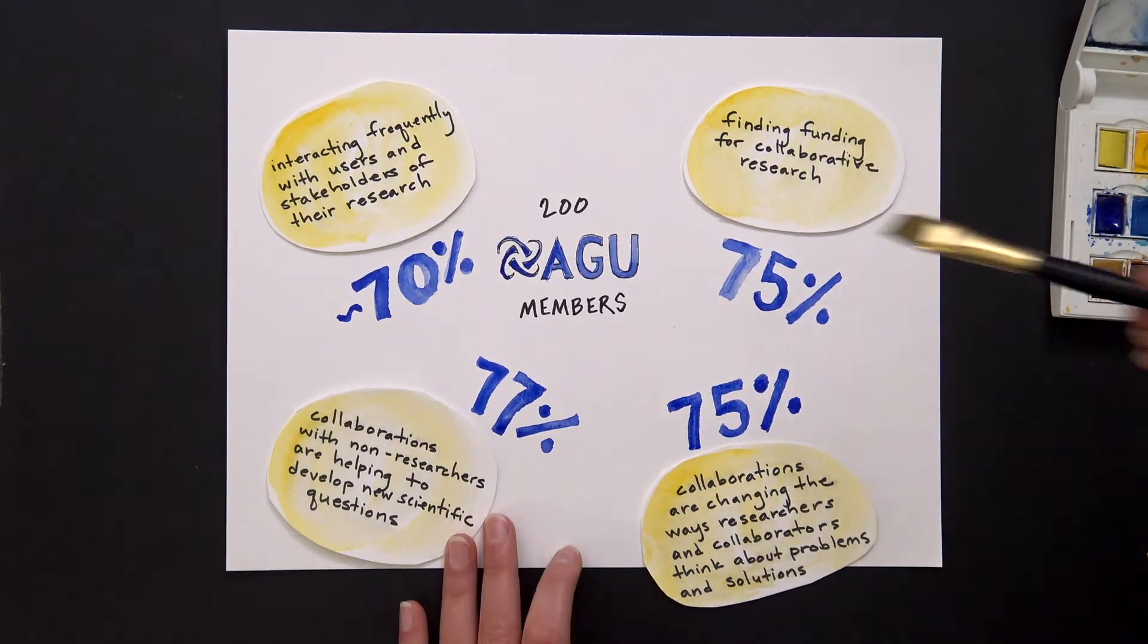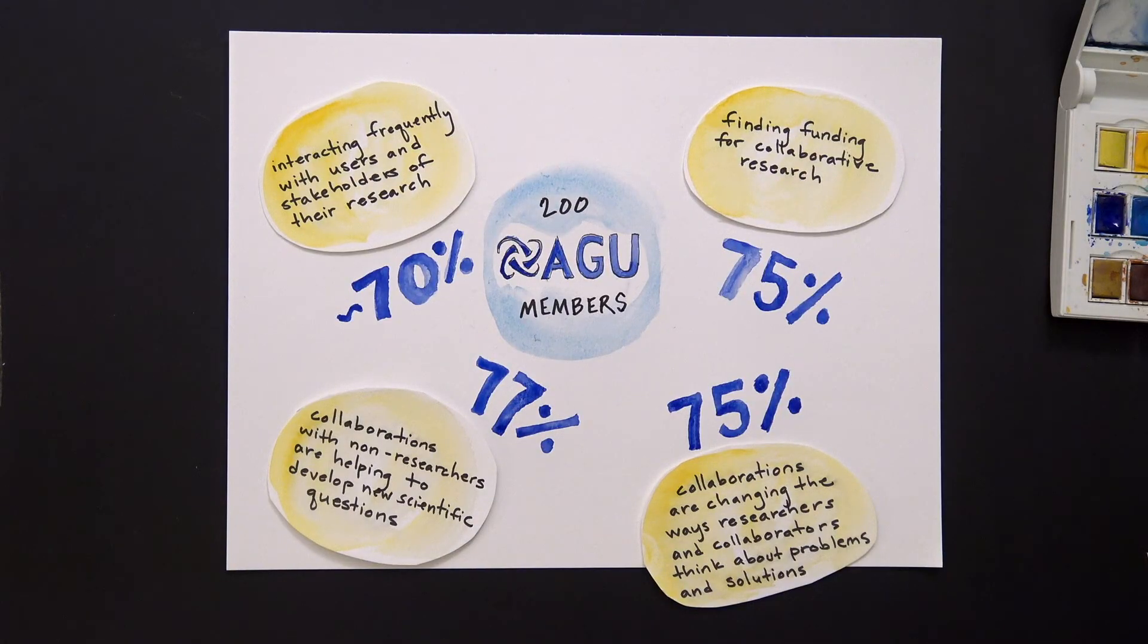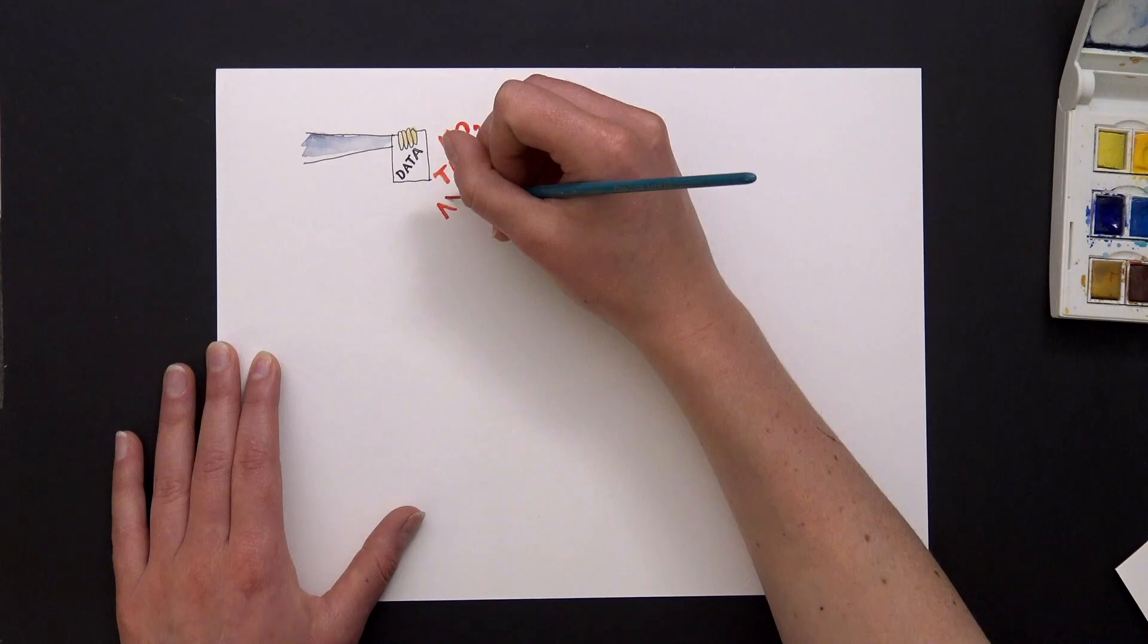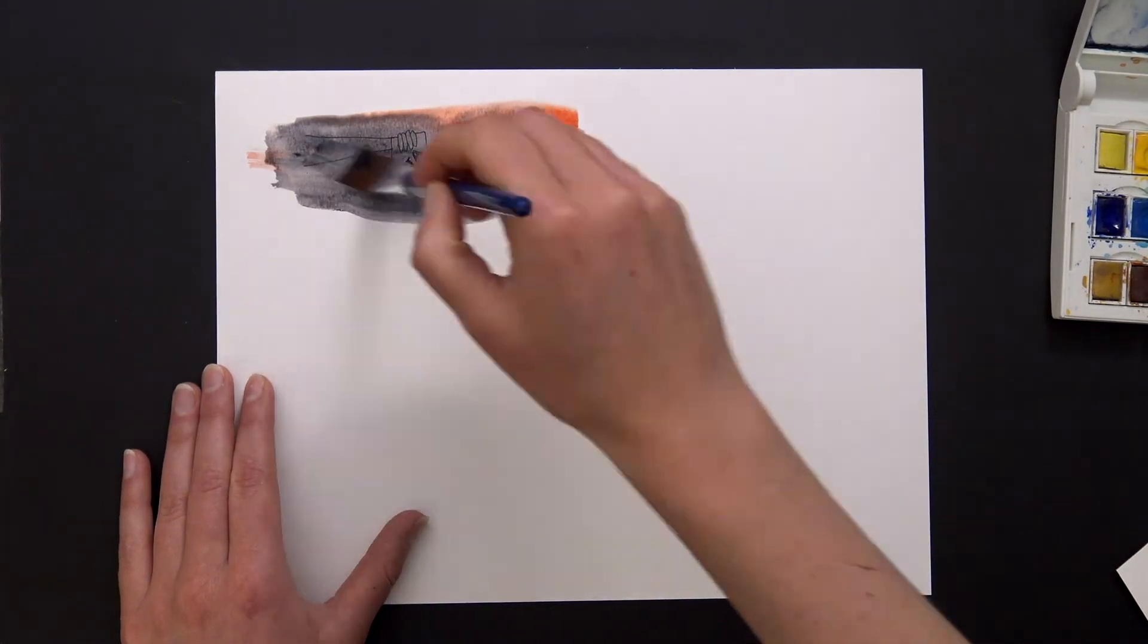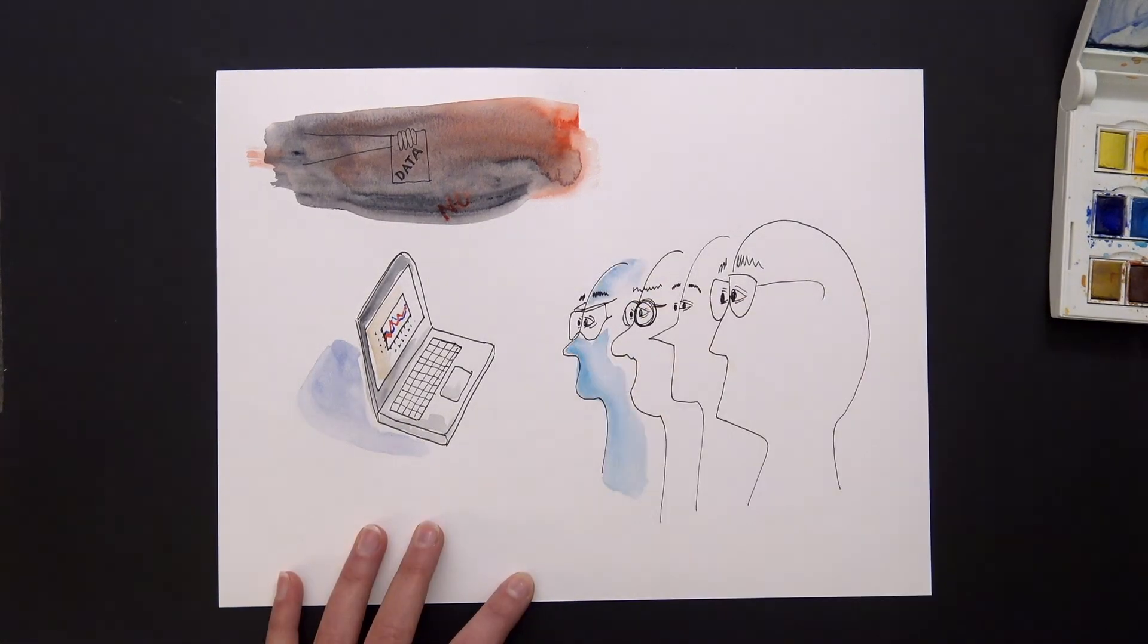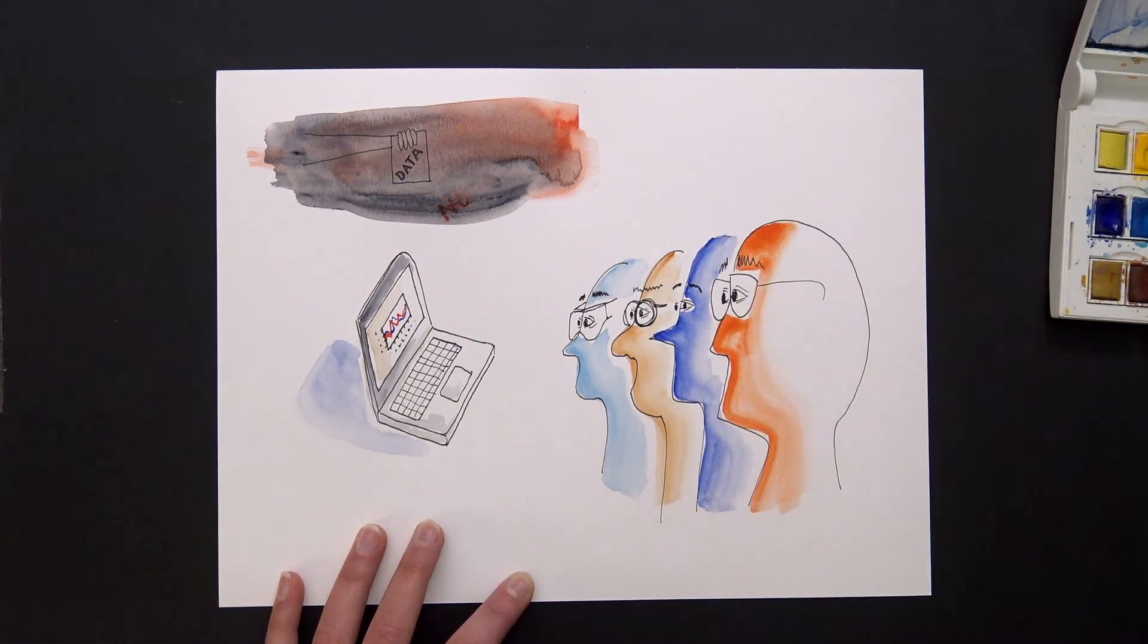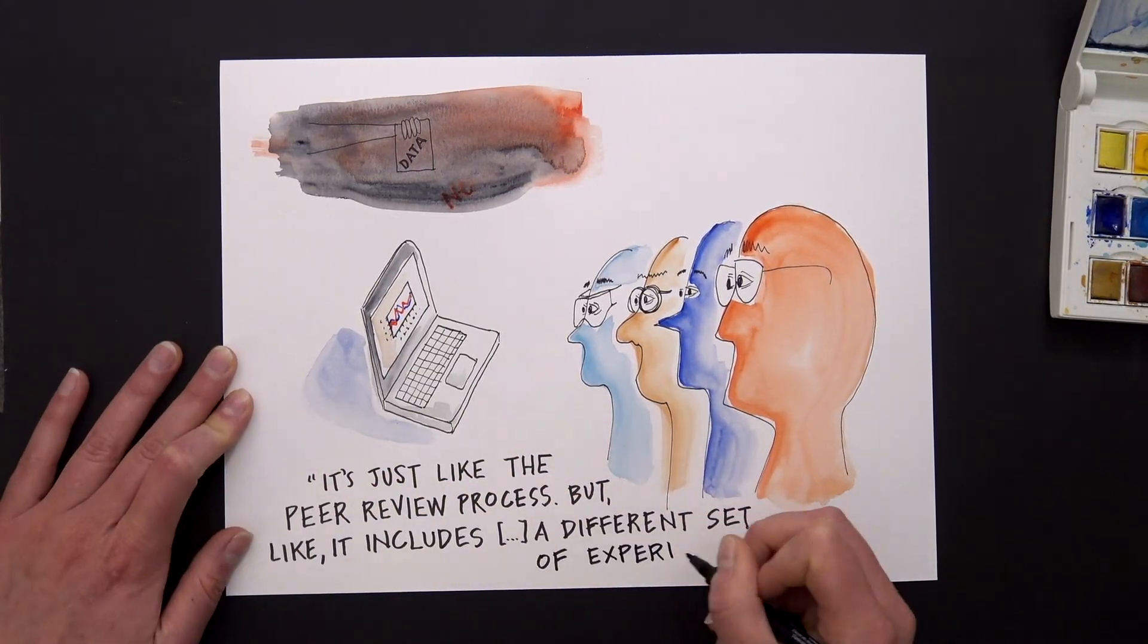Stories are also emerging from many different types of Earth scientists conducting collaborative research. For example, a hydrologist working with water managers to produce new data shared this experience: We handed off the data to the users, and they came back saying, no, this is no good. We ended up going back, recalibrating everything, and it ended up being a better representation of the hydrology of the region. I think it's a testament to the diversity of eyes, because it's like I'm kind of toiling away on my computer, but there's other people with a totally different perspective. It makes you think about the scientific questions from a different perspective. It's just like the peer review process, but it includes a different set of experiences.